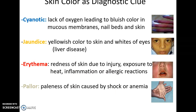Other things about a person's health can be seen in skin color. Cyanosis — bluish-colored skin and mucous membranes — indicates a lack of oxygen. Jaundice — a yellowish color of the skin and whites of the eyes — can be a sign of liver disease. Erythema or redness of the skin can be caused by blushing, injury, heat exposure, inflammation, or allergic reaction. Pallor or paleness of the skin can be caused by shock or anemia.